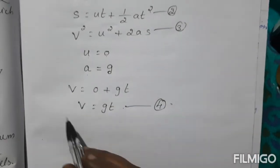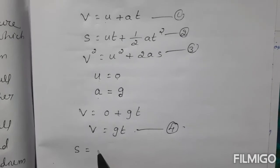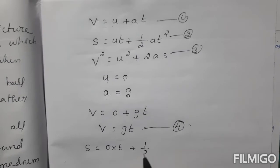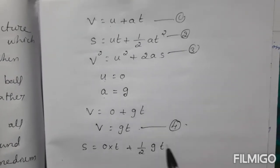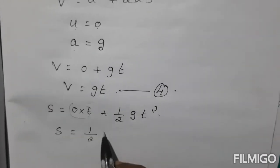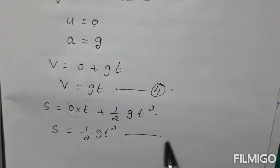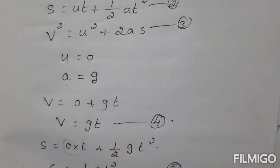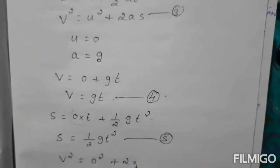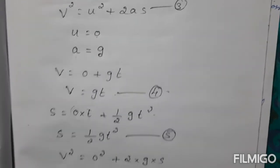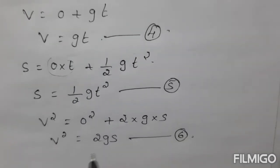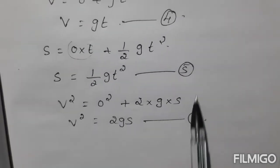For the second equation, S equal to UT plus half AT square, substituting U equal to 0 and A equal to G: S equal to 0 into T plus half GT square, so S equal to half GT square. This is equation number 5. For the third equation, V square equal to U square plus 2AS, substituting U equal to 0: V square equal to 0 plus 2GS, so V square equal to 2GS. This is equation number 6. Like that, for a freely falling body, the equations of motion change.